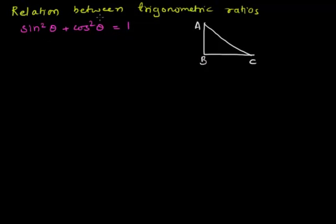Now let's learn some relations between trigonometric ratios, in which we are going to prove sin²θ + cos²θ = 1. Suppose this is a right angle triangle ABC. Angle A is, say, θ.